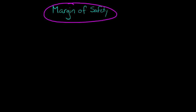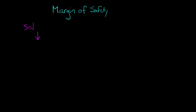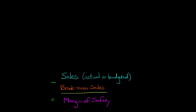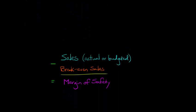When we talk about margin of safety in the context of cost accounting, what we really mean is the amount that sales can drop before you start incurring losses. So we have some forecasted sales numbers and we ask: how much could these sales drop before we start losing money? This is actually a really simple concept, best understood in the context of an example.